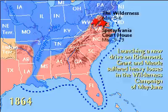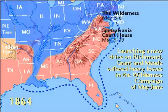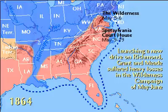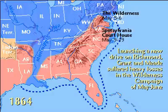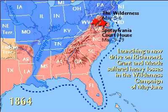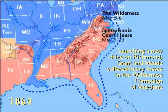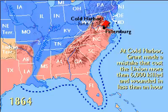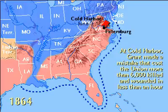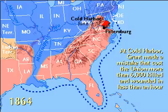In March of 1864, Grant was appointed General-in-Chief of all Union armies. He launched a new drive on Richmond, but he and Meade suffered heavy losses in the Wilderness Campaign of May and June. At Cold Harbor, Grant made a mistake that cost the Union more than 6,000 casualties in less than an hour.